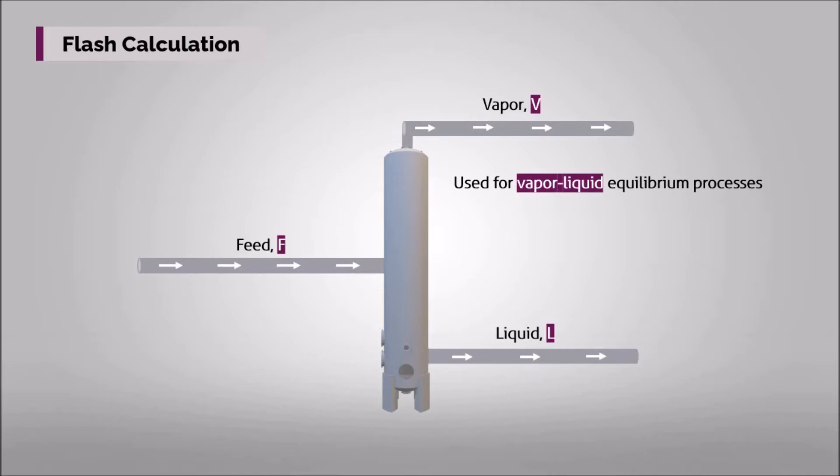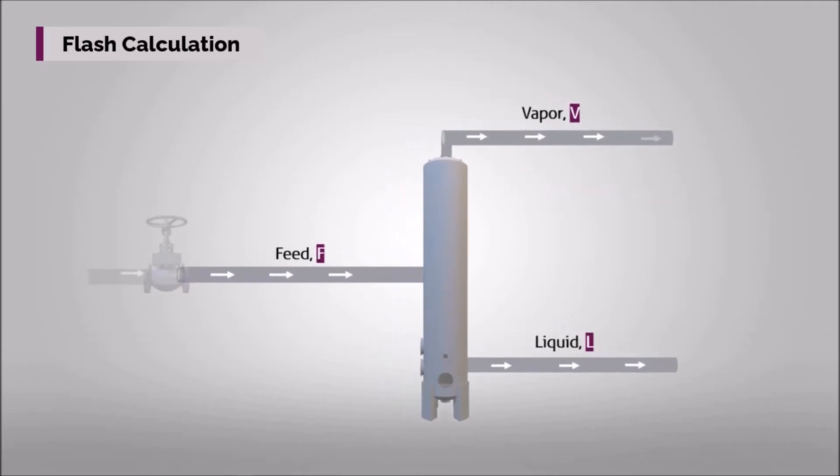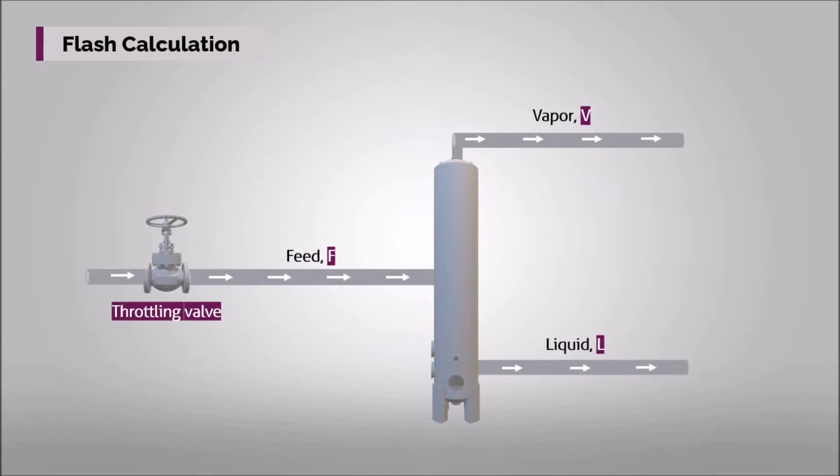When feed stream enters the flash drum or separator, it requires sudden pressure decrease due to the separation of liquid feed into the vapor and liquid. This process is accomplished by a throttling valve that is located before the separator.